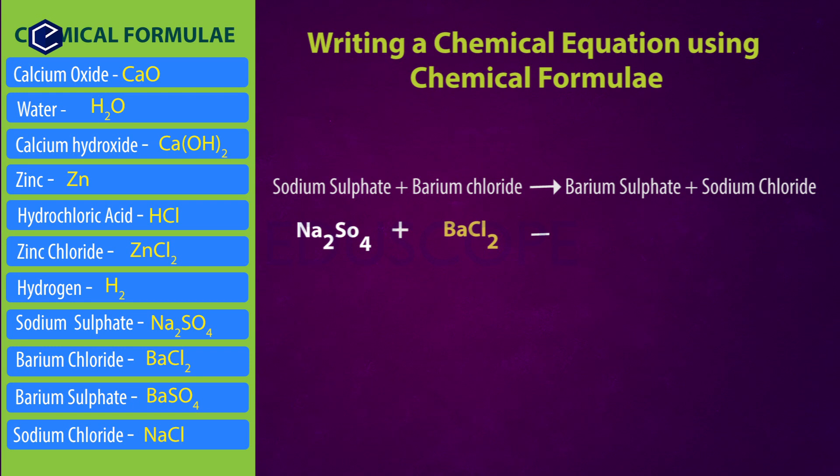In the reaction, the product is barium sulfate. Barium sulfate chemical formula is BaSO4. BaSO4 is barium sulfate. Barium sulfate plus sodium chloride. Sodium chloride chemical formula is NaCl. So this is the chemical equation: sodium sulfate plus barium chloride gives rise to barium sulfate plus sodium chloride.